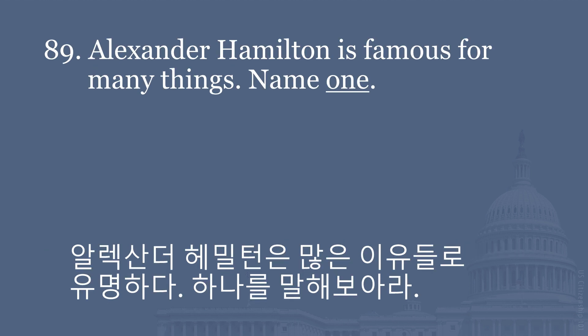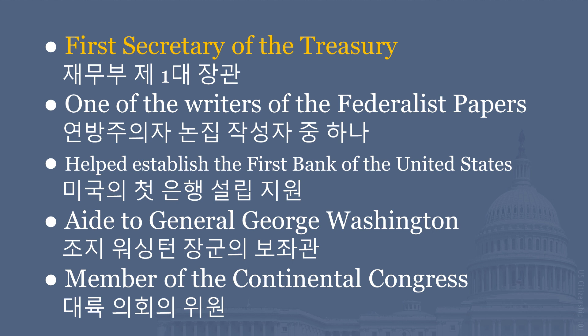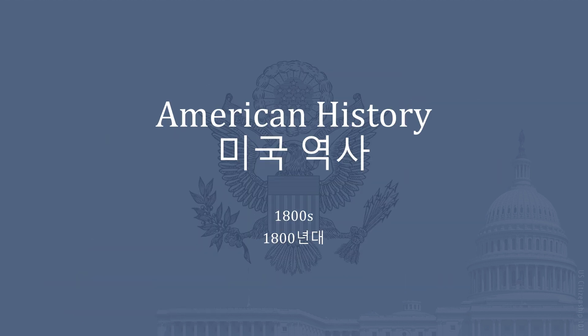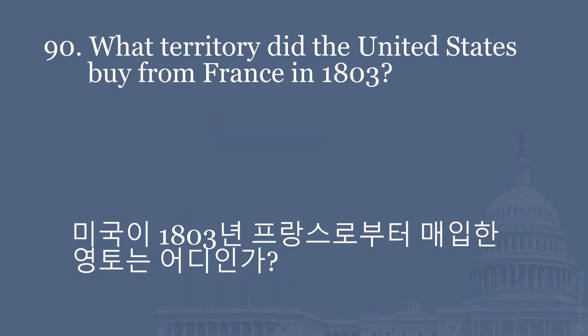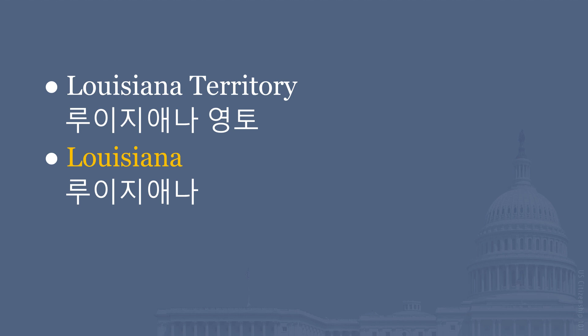Alexander Hamilton is famous for many things. Name one. First Secretary of the Treasury. One of the writers of the Federalist Papers. Helped establish the First Bank of the United States. Aid to General George Washington. Member of the Continental Congress. What territory did the United States buy from France in 1803? Louisiana Territory.